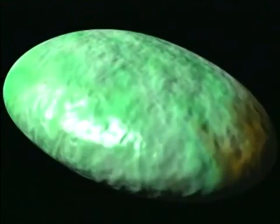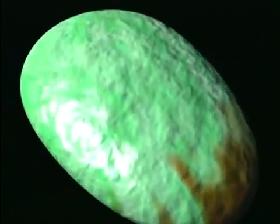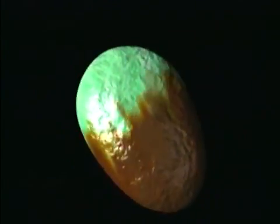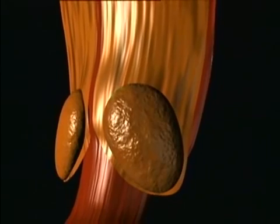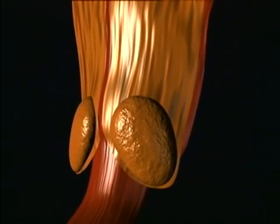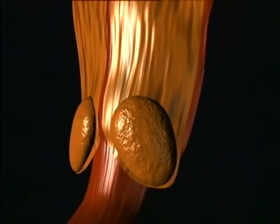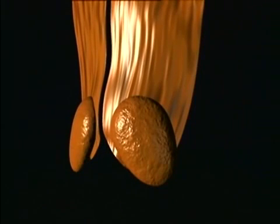Seed maturation is also accompanied by the transformation of the integument into a tough, protective seed coat. The seed and surface tissue separate from the cone scale, forming a winged seed. Cone opening and seed release usually take place in the autumn of the second year.